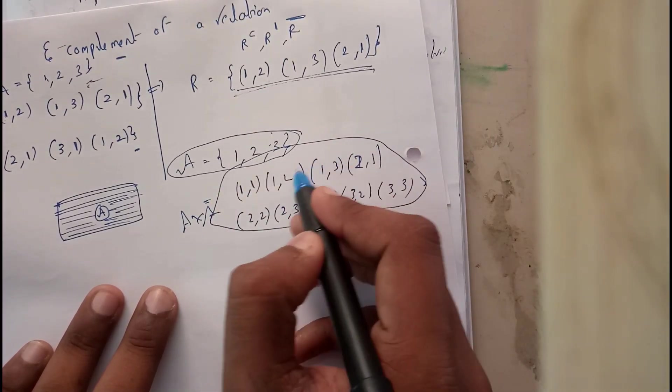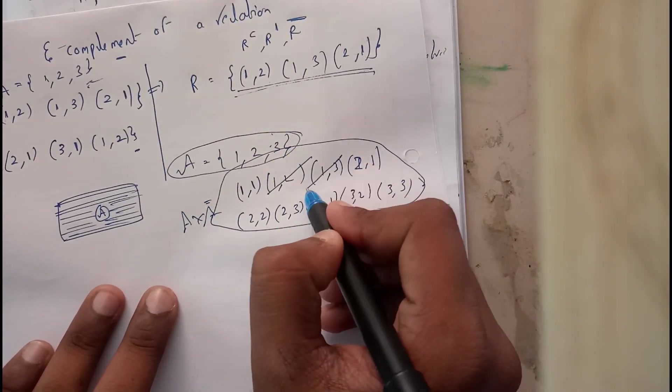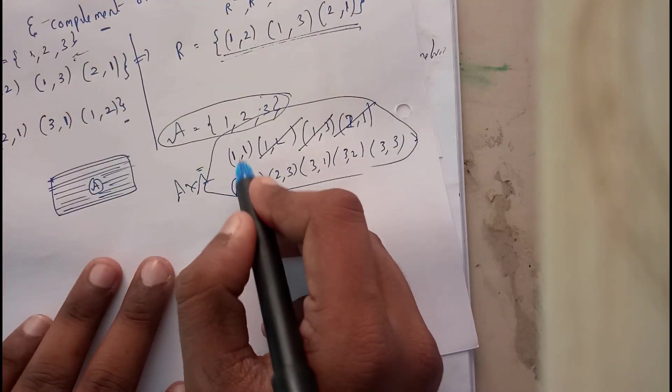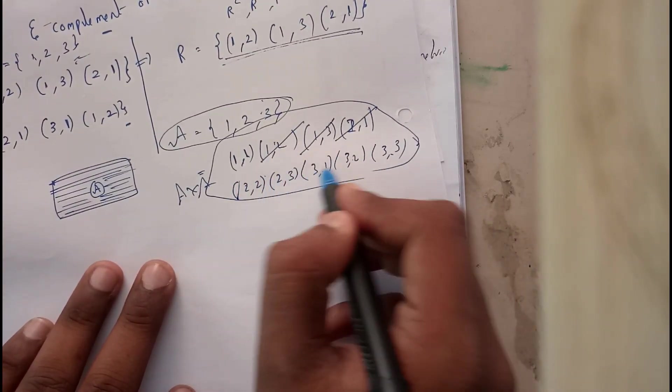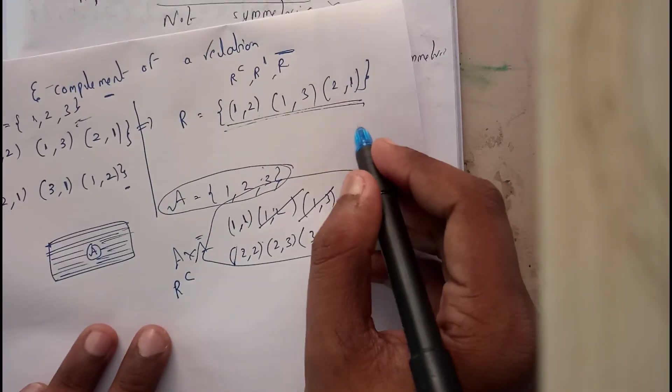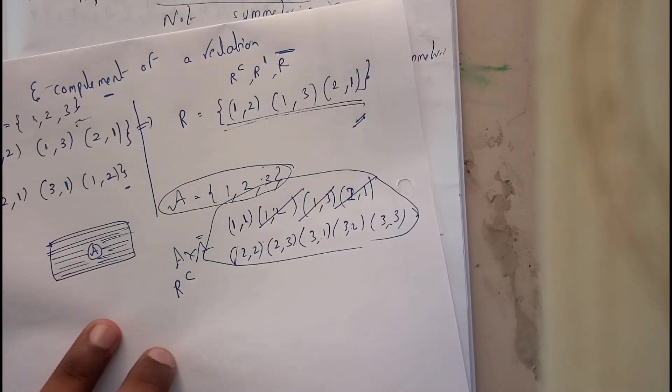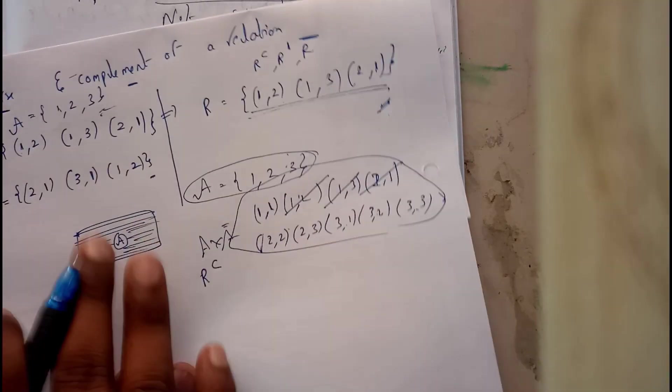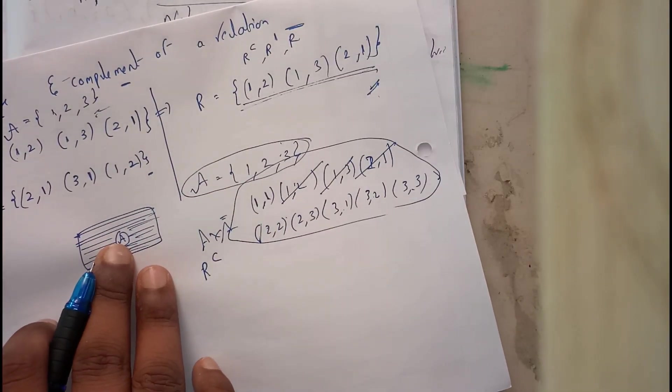Once cancelling these (1,2), (1,3), and (2,1), the rest of these five pairs are the R complement. I hope now you are clear with complement and inverse.